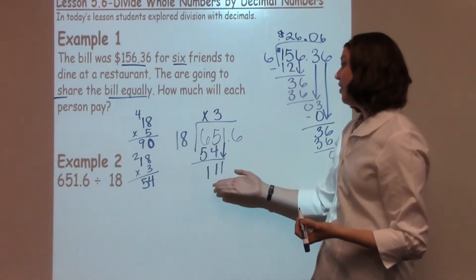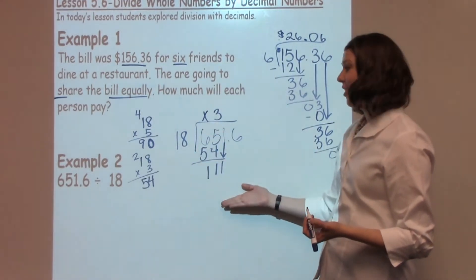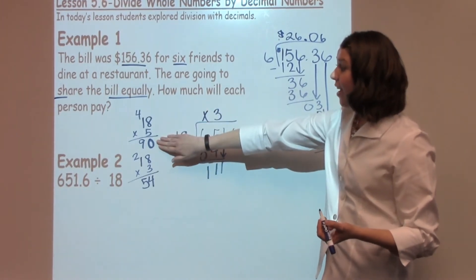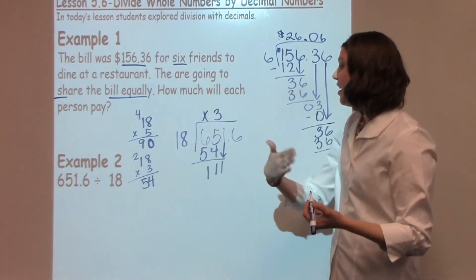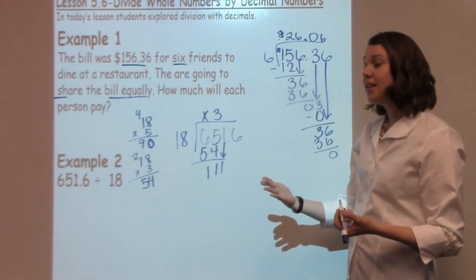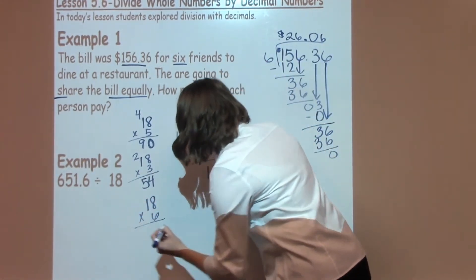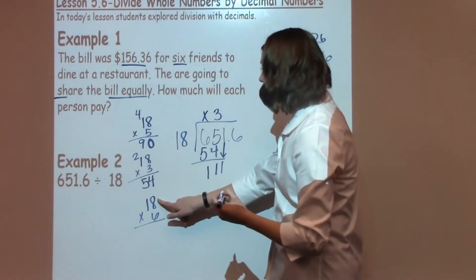How many times can eighteen go into a hundred and eleven? Looking at my guess-and-check, I have a good starting spot. I know that I've got ninety here, but it's five times. I need to go slightly above that. So I'm going to take eighteen times six. When I take eighteen times six, I have eight times six, which is forty-eight.